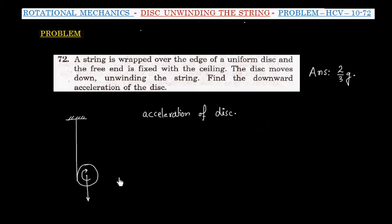Let us say this is falling with acceleration A and rotating with angular acceleration alpha. If I consider a point here, point A, this will have two accelerations: downward acceleration A and upward acceleration alpha times R, where R is the radius of the disk.